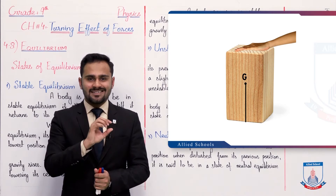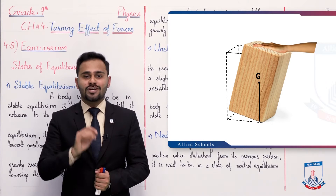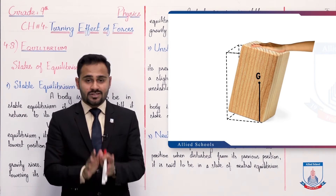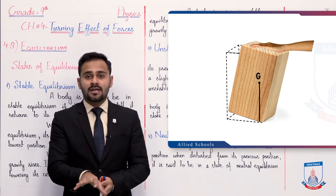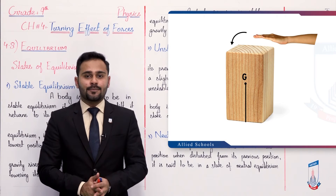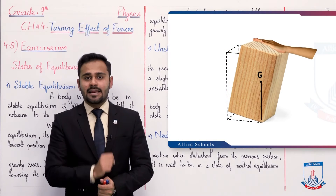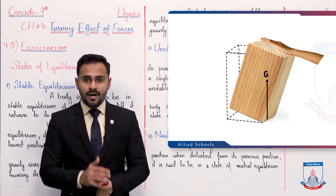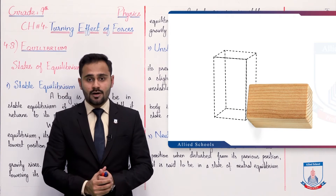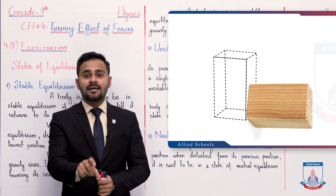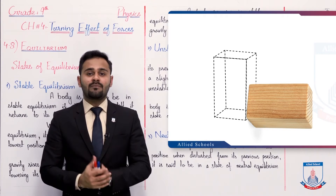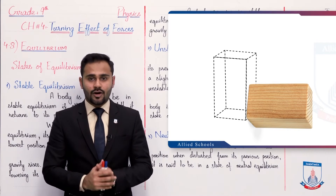We tilt the block and the center of gravity rises and the vertical line moves, but it still falls within the base. However, if you tilt it further so that the vertical line crosses the base — goes outside the base — then if you release the body, it will fall over. So a body remains in stable equilibrium as long as its vertical line falls on the base.